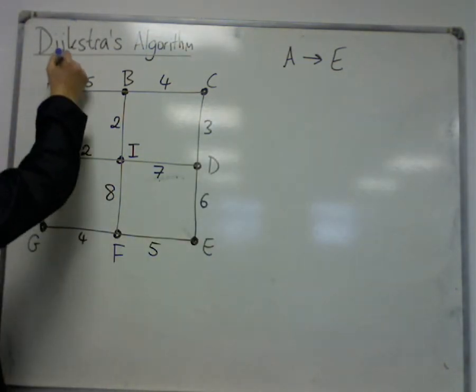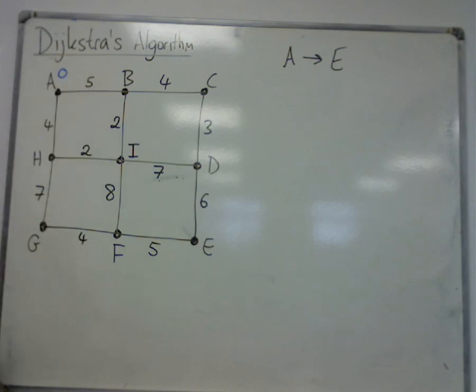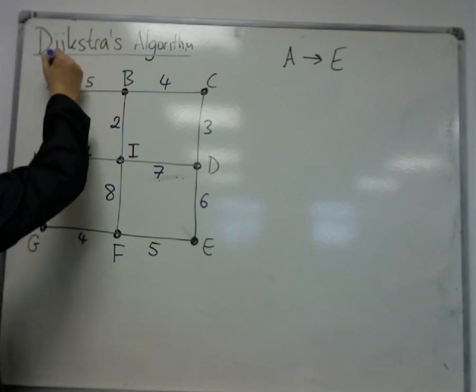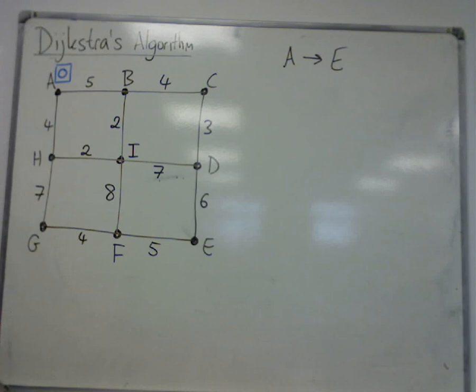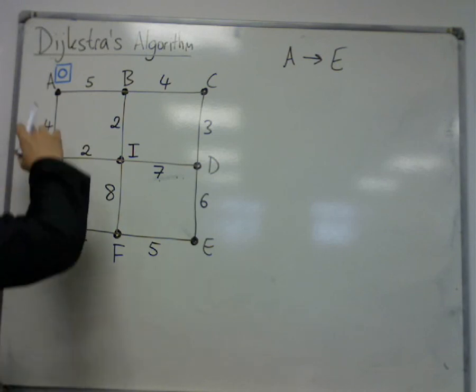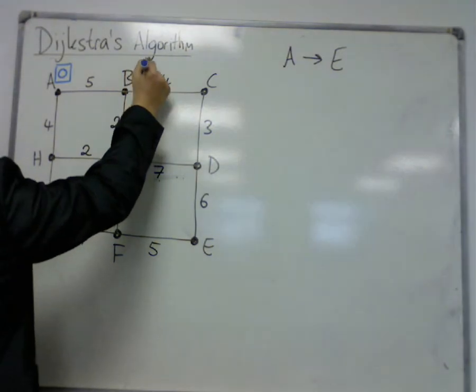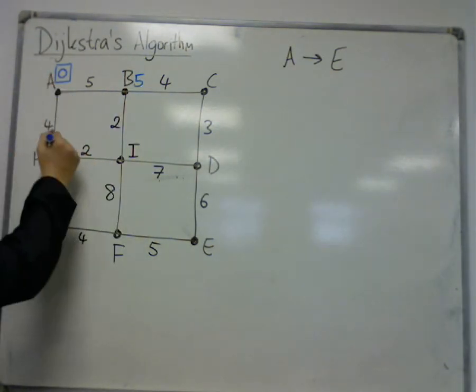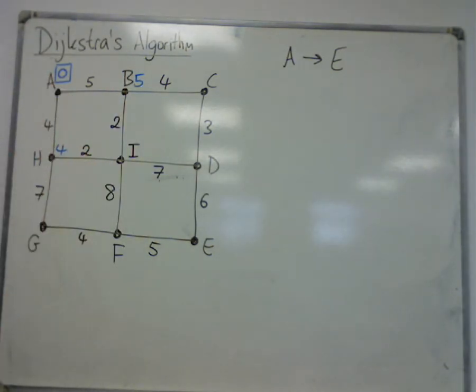Okay, so first of all, I put a zero at my starting vertex. I box it because that's now the one that I'm considering. And I find the shortest distance out of A. So I could go to B, which would be 5. And I could go to H, which would be 4.